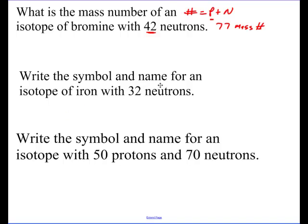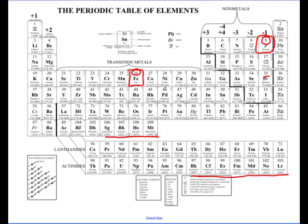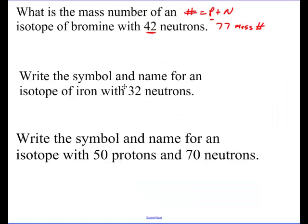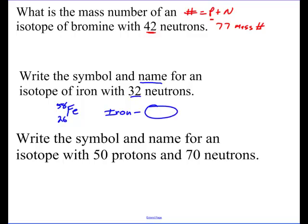Write the symbol and the name for an isotope of iron with 32 neutrons. First, look on the periodic table and find iron — its symbol is Fe and it has an atomic number of 26. I'll write Fe with 26 on the bottom. The mass number I have to figure out: protons plus neutrons is 32 plus 26, which is 58. So the symbol is Fe-58 with 26 below and 58 above. The name is iron-58. Pause the video, rewind, and try to get this down, because we'll be doing a number of these in class.